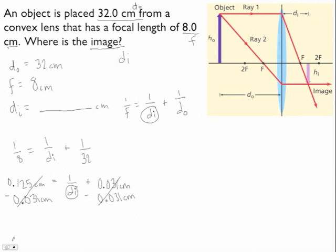And you're going to get 0.094 centimeters equals 1 over di.